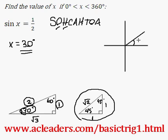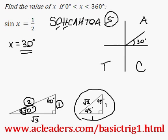Why is there more than one value? Because on the second quadrant, we also have positive values for sine. We have negative values for tangent and cosine, but that doesn't matter in this case.